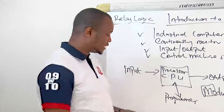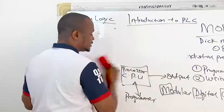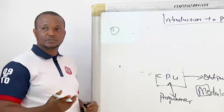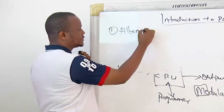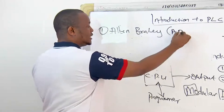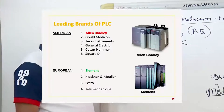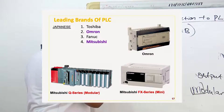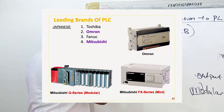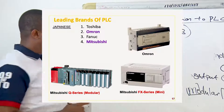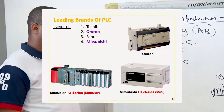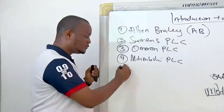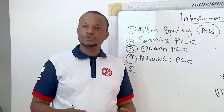PLCs are commonly used in industries, and there are popular brands of PLC you may find in your industry. One of them is the Allen Bradley PLC — an American PLC. We have the Siemens PLC. We also have the Omron PLC and the Mitsubishi PLC. The Mitsubishi PLC is one we are going to be making use of when you come to the center. We also have Allen Bradley and Siemens at the center, and we are going to try our hands on these popular brands.